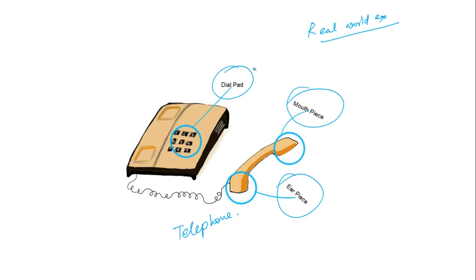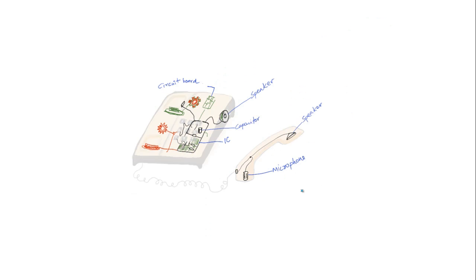But if you are looking at any real-life telephone, you can understand that it is not just a dial pad, mouthpiece, and earpiece — these three are not the only components. The actual telephone is much more complicated internally; it has a circuit board, speaker, capacitors, integrated circuits, and a microphone. But in order to use the telephone, we just don't have to bother about all of these things, and we don't have to understand what network switching systems the telephone exchanges use.